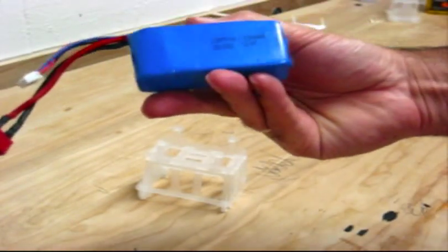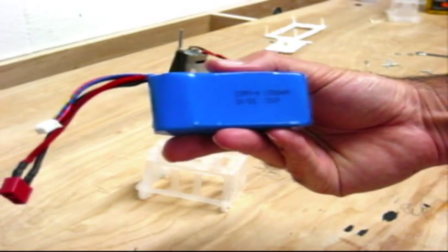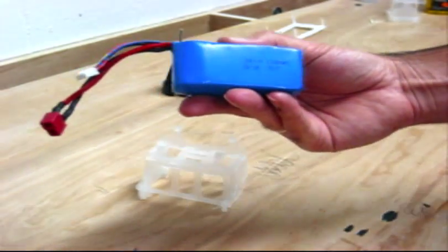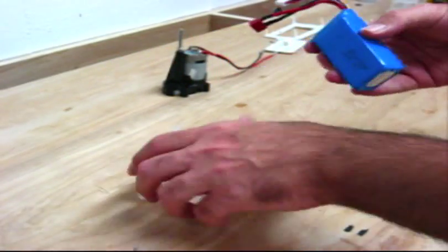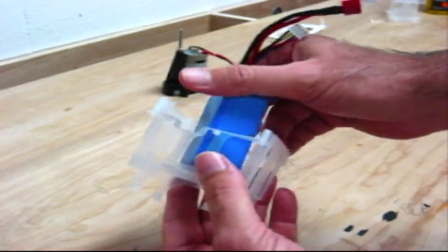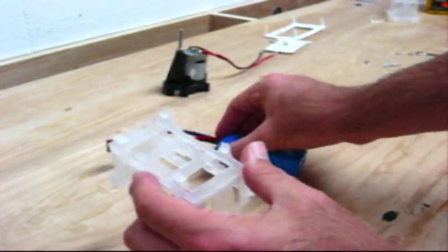As you can see, it's a Zippy 1500, 20-30C, 3S 1P. It's a 3-cell, 1 in parallel. But the problem is it doesn't fit in the battery box. There's no way to make it work, so you have to modify it.